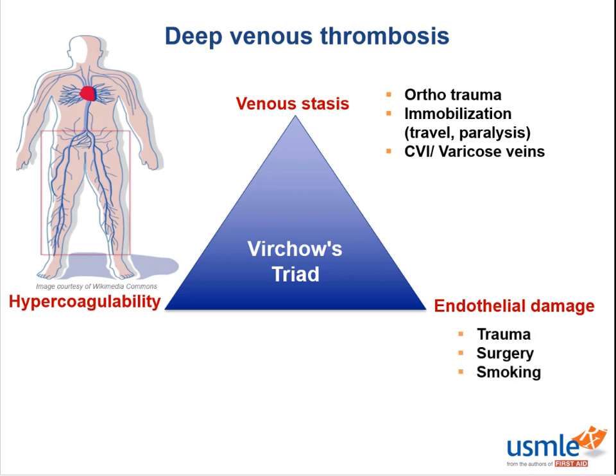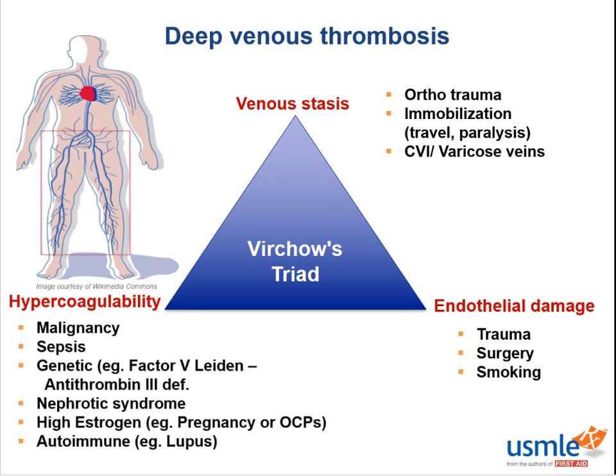As for endothelial damage, trauma, surgery, and smoking can all damage the endothelium. Can you think of some conditions that cause hypercoagulability? So malignancies, sepsis, genetic thrombophilial disorders like factor V Leiden, and antithrombin 3 deficiency. Also, you can lose the natural antithrombin 3 in the urine in nephrotic syndrome, causing hypercoagulability.